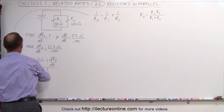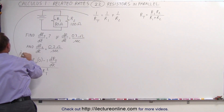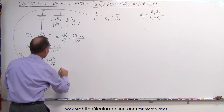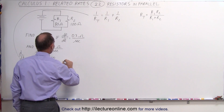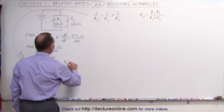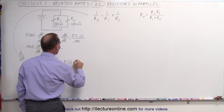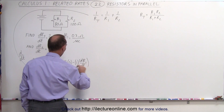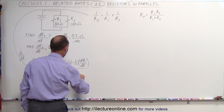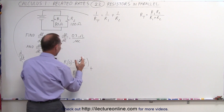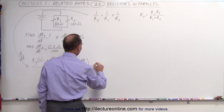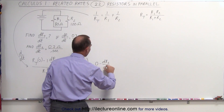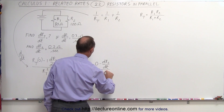Now moving to the right side, we take d/dt of both sides. We apply the same quotient rule: the denominator R1 times the derivative of the numerator, which is 0, minus the numerator times dR1/dt, all divided by R1 squared. And we get exactly the same form for the second resistor: 0 minus dR2/dt, divided by R2 squared.